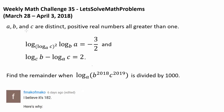We have a, b, and c being distinct positive real numbers, all greater than 1. We have log base (log base a of c squared) of (log base b of a) being negative 3 halves. And log base c of b minus log base a of c is 2.